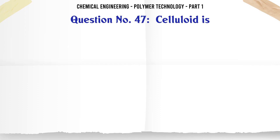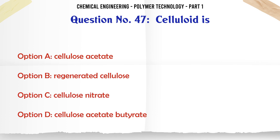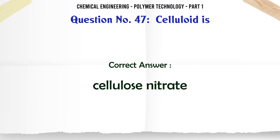Celluloid is: A. Cellulose acetate, B. Regenerated cellulose, C. Cellulose nitrate, D. Cellulose acetate butyrate. The correct answer is Cellulose nitrate.